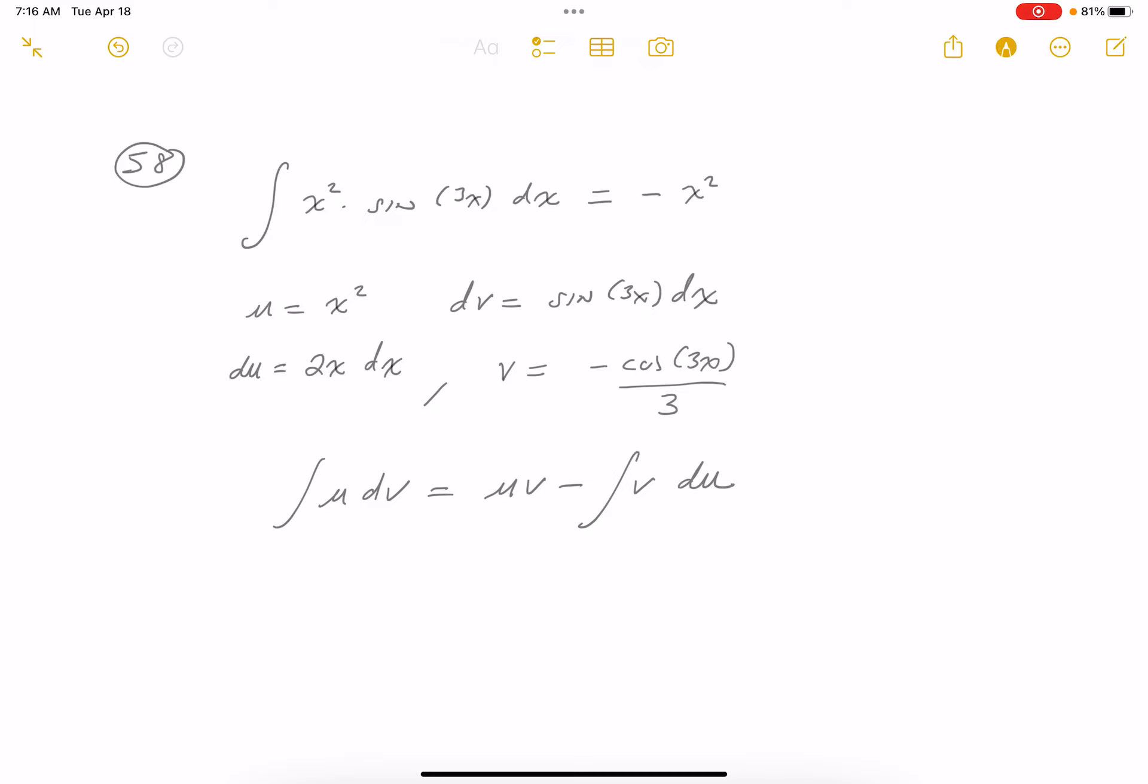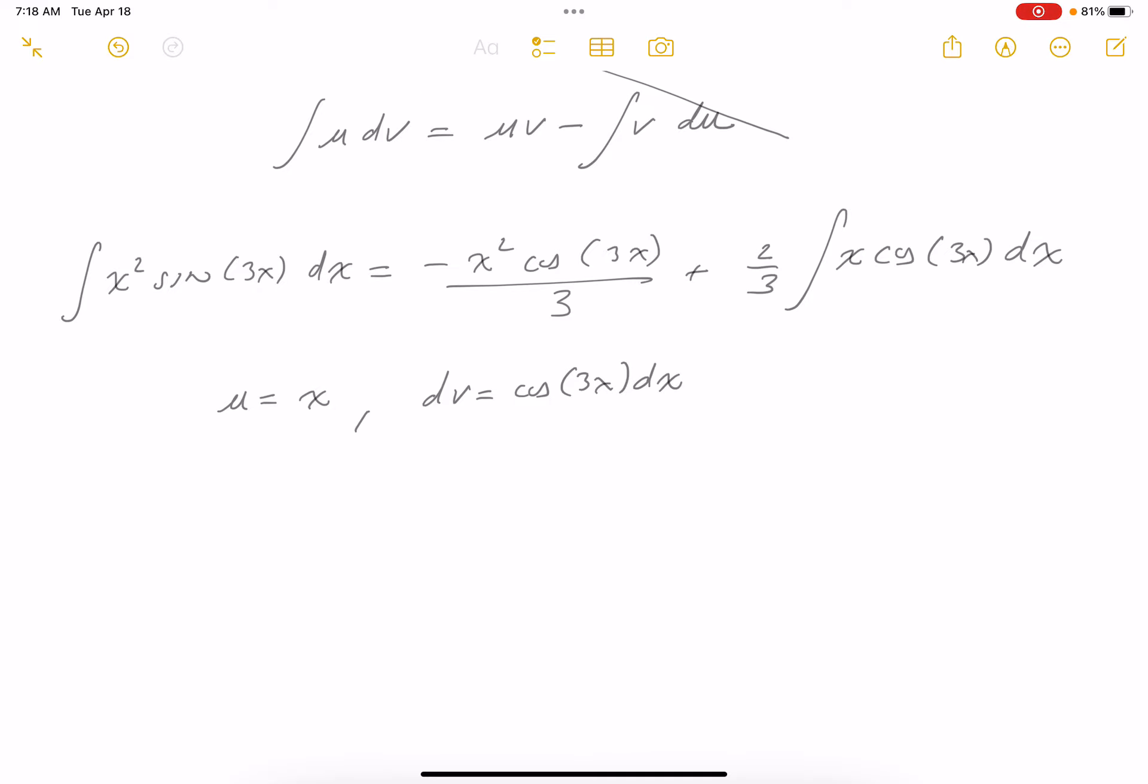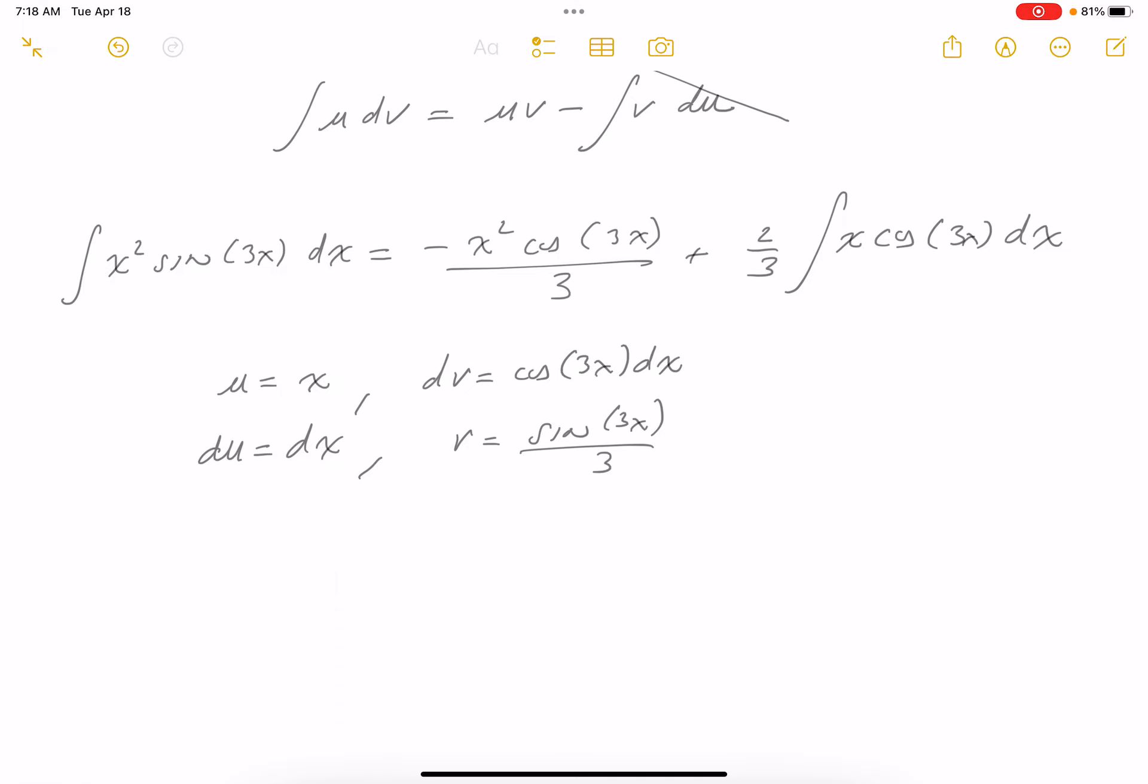The reason I'd lightly cross the one above is I don't want to confuse the u's now. So let's write this down. I'm gonna say u equals x, and then the dv would equal cosine 3x dx. What do you get there? du, that's pretty simple, it's dx. The v would equal sine of 3x over 3.